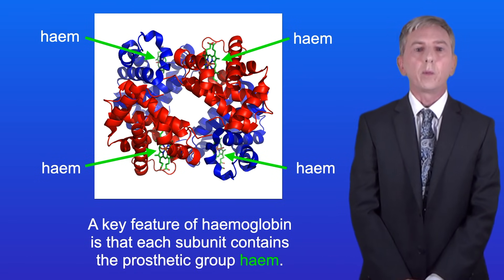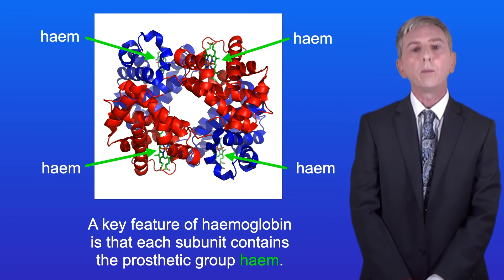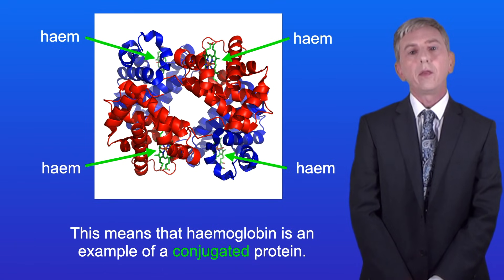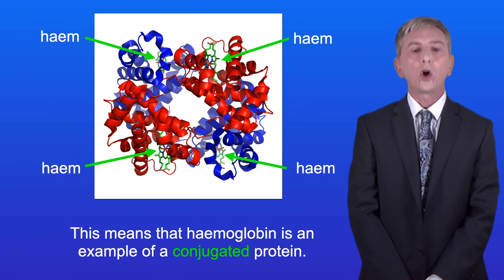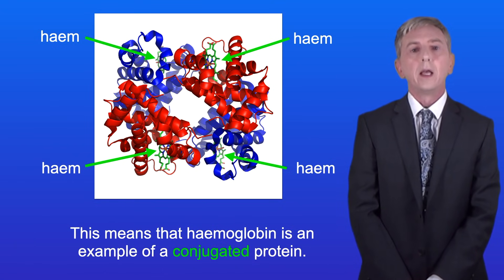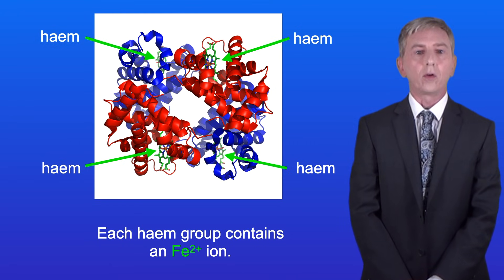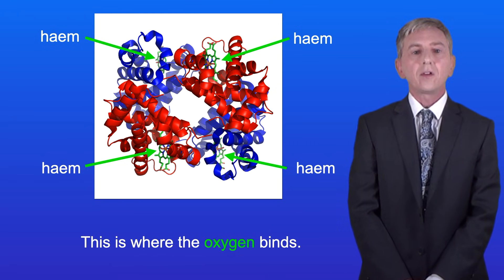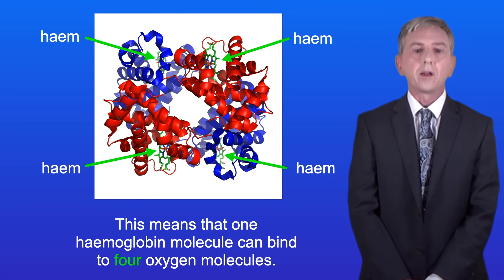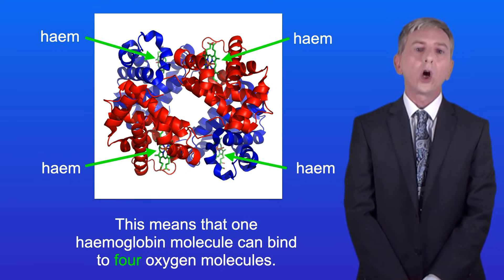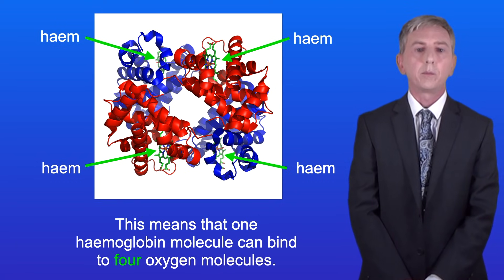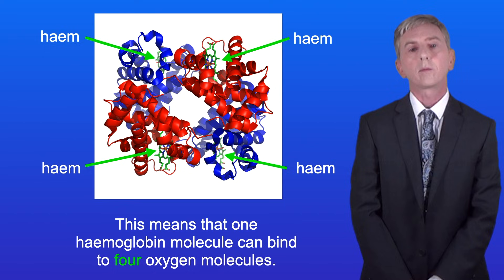A key feature of haemoglobin is that each subunit contains the prosthetic group heme, which means that haemoglobin is an example of a conjugated protein. Each heme group contains an Fe2+ ion, and this is where the oxygen binds. So one haemoglobin molecule can bind to four oxygen molecules.